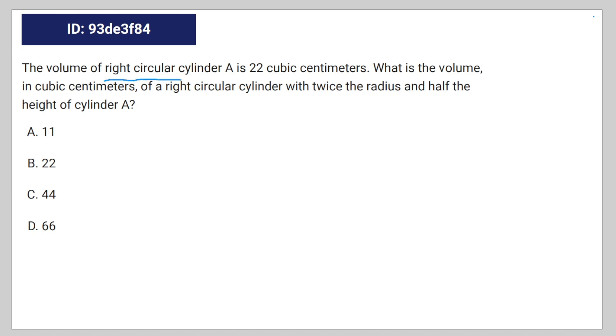So you can write the equation of cylinder A like this: 22 is equal to the volume formula for a right circular cylinder, which is height times pi times R squared.